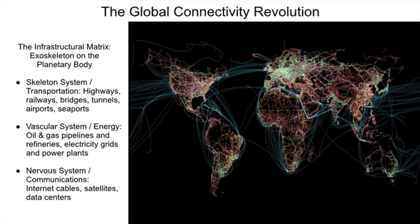If you put them all together, what you will find is that the man-made infrastructure of the world that we have ourselves built out-numbers all of the world's political divisions, all of the world's borders, by about 150 to 1.